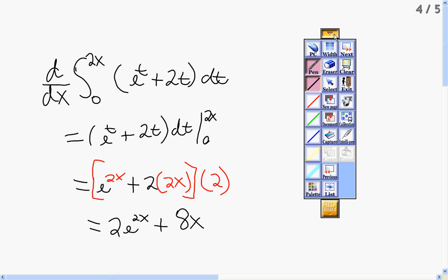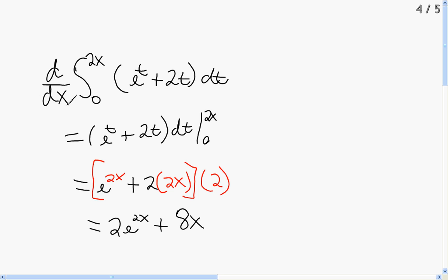Alright, so here's where we started with taking a derivative of an integral from 0 to 2x of the function e to the t plus 2t times the derivative of t dt. This derivative sign, the derivative d over dx, takes away the integral, so I'm just left with the function.